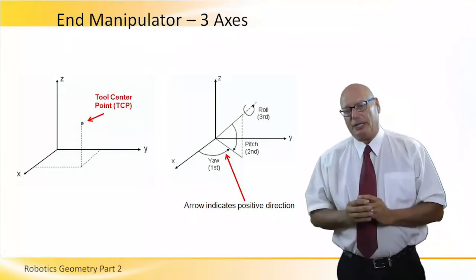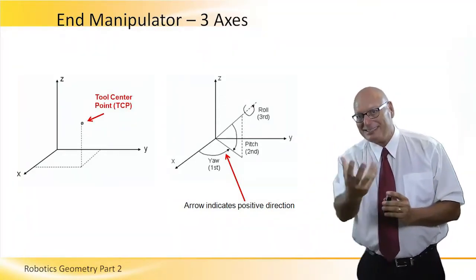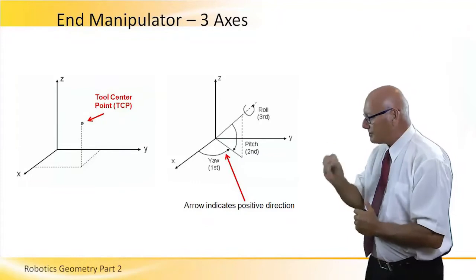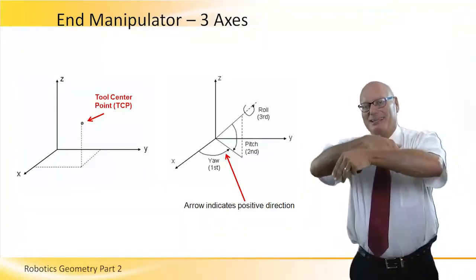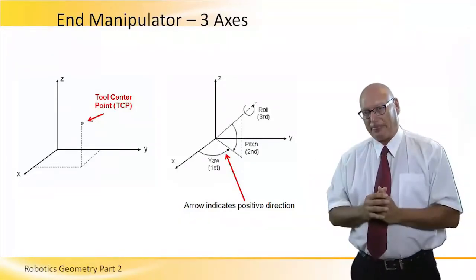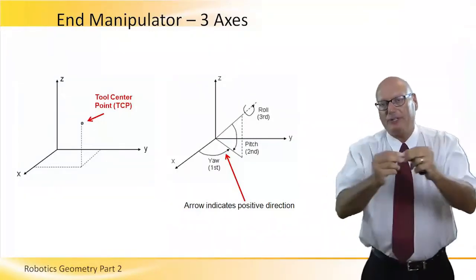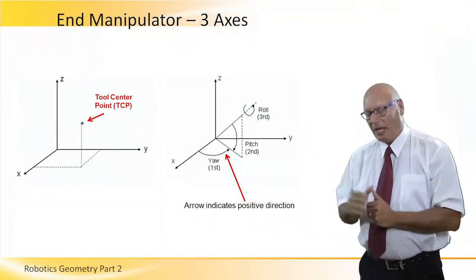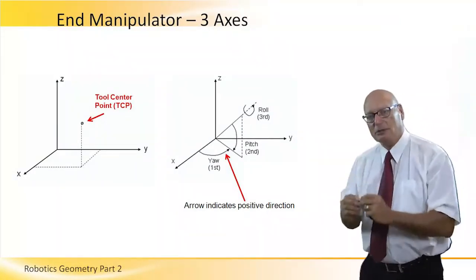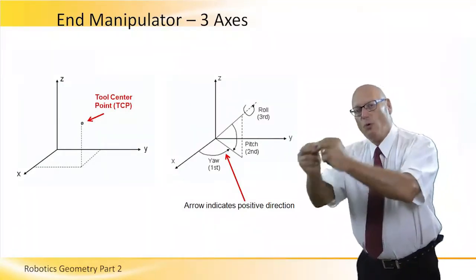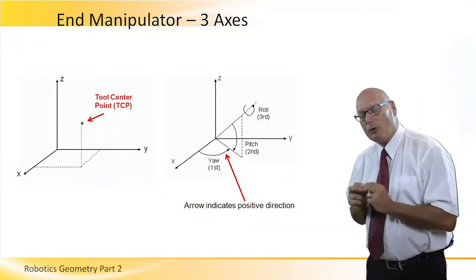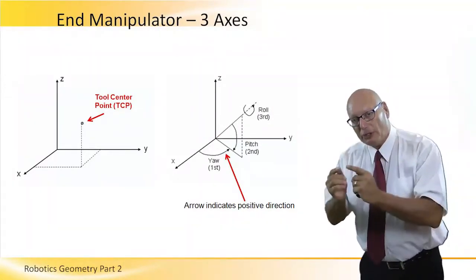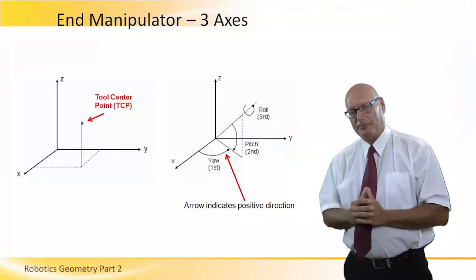Tool center point — we will use the term TCP many times in this seminar. The tool center point is the point exactly in the center of the fingers. You can call it the center of gravity of the fingers themselves while not holding any object — empty fingers, empty gripper. The TCP is extremely important because this is where we want to bring the robot to. We want to move the robot to the XYZ of the TCP, not the XYZ of the actuator of the gripper.